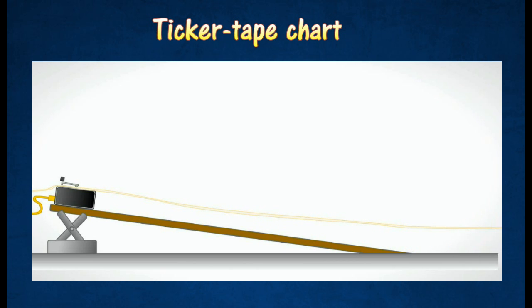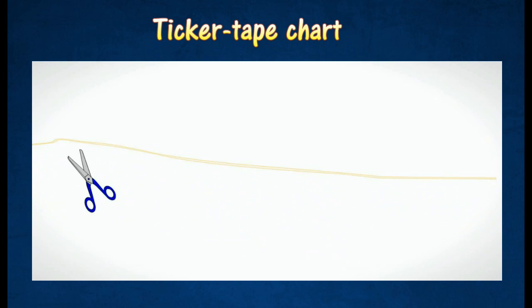Ticker tape charts can be constructed by cutting the ticker tape into lengths with an equal number of dots on each length, and sticking the lengths side by side in the same order that they were on the whole tape.